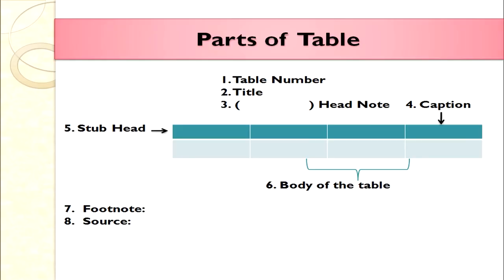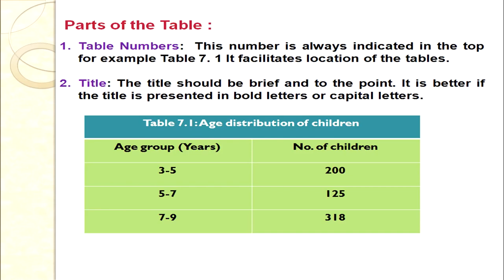Next we are going to discuss the parts or format of a table. When we discuss the format of a table we count 8 elements. The eight parts are: table number, title, head note, caption, stub, body of the table, footnote, and source. The body of the table is the most important part where all the information is contained. The footnote is just below the body, and after that comes the source.